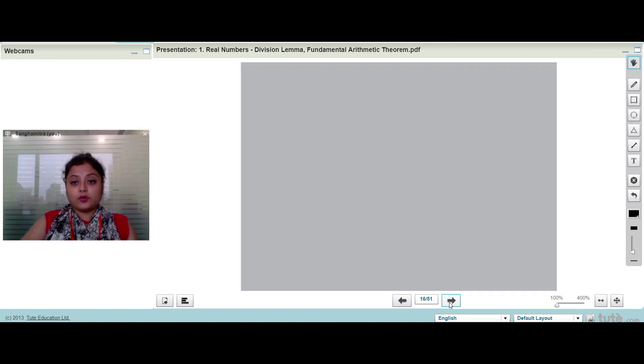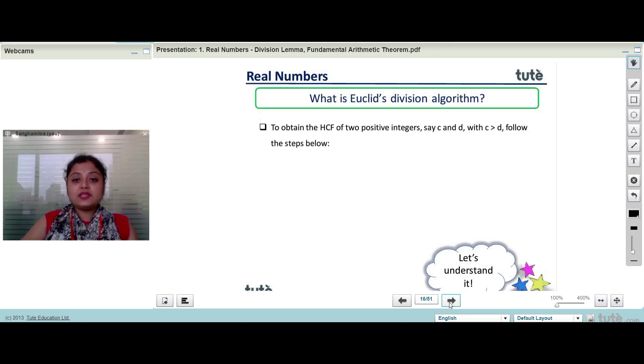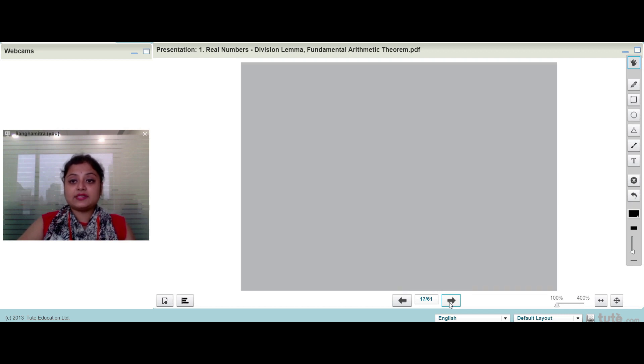What is the Euclid division algorithm? To obtain the HCF of any two positive integers, say C and D, where C is greater than D, follow the following steps.